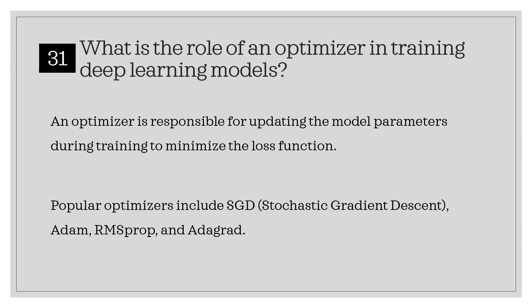What is the role of an optimizer in training deep learning models? An optimizer is responsible for updating the model parameters during training to minimize the loss function. Popular optimizers include SGD (stochastic gradient descent), Adam, RMSProp, and Adagrad.